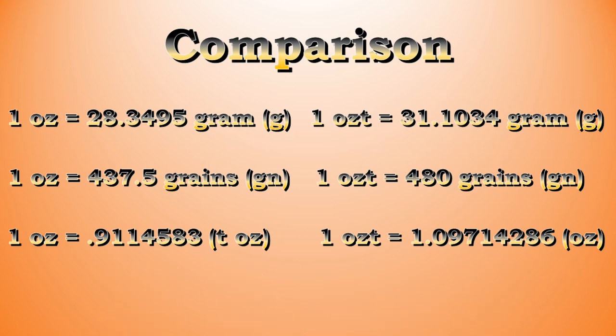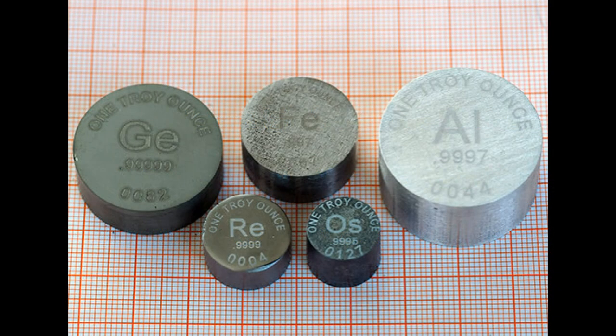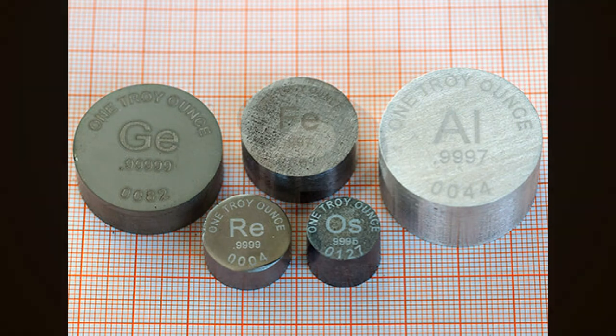These differences may not amount to much in small quantities, but can add up in larger quantities. As stated earlier, the troy ounce continues to be used today as the standard unit of measure in the precious metals markets to ensure purity standards and other common measures remain constant over time.